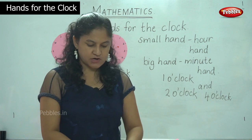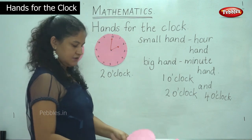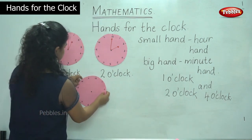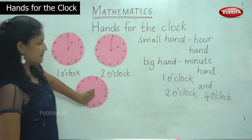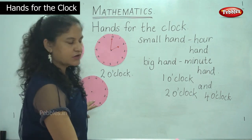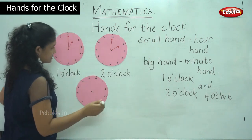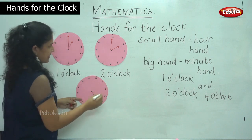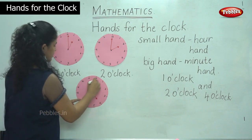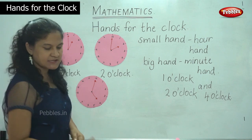Now to mark the timing for 4 o'clock, we have another model of the clock. When it is 4 o'clock, the small hand or the hour hand points towards number 4, and the long hand or the minute hand points to number 12. So then we read the time as 4 o'clock.